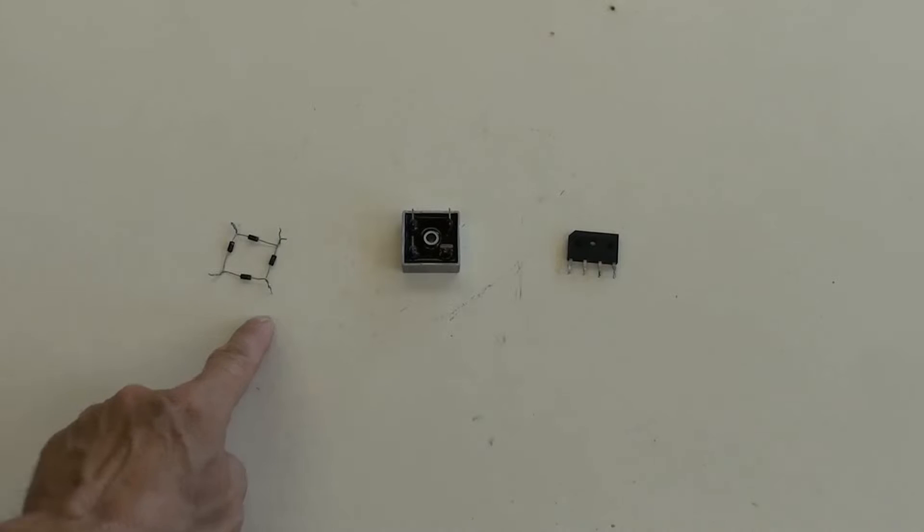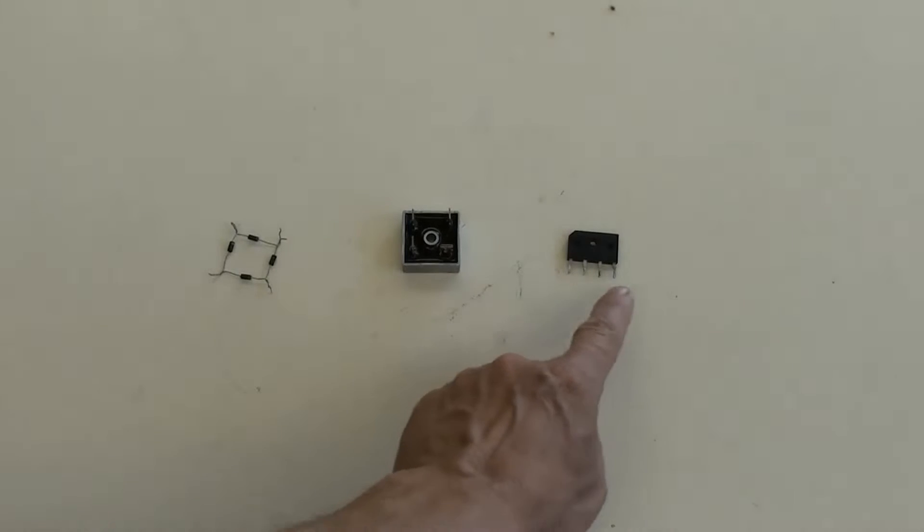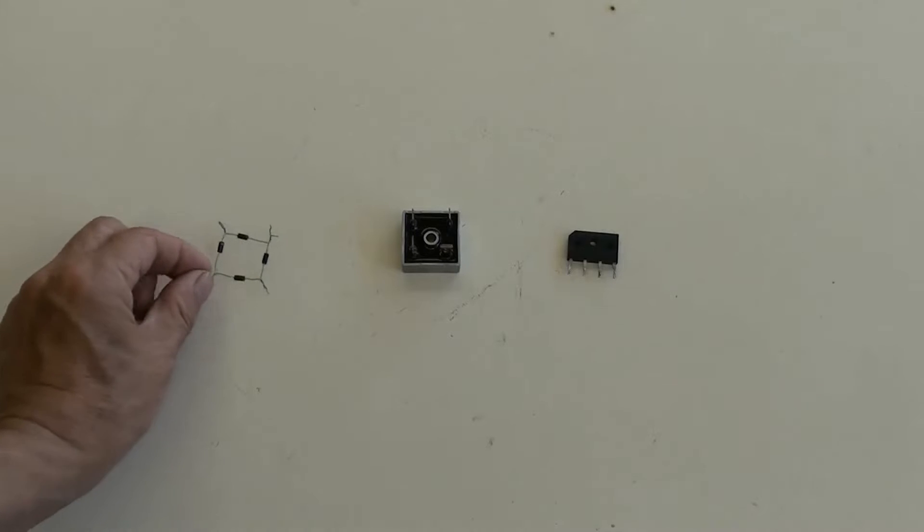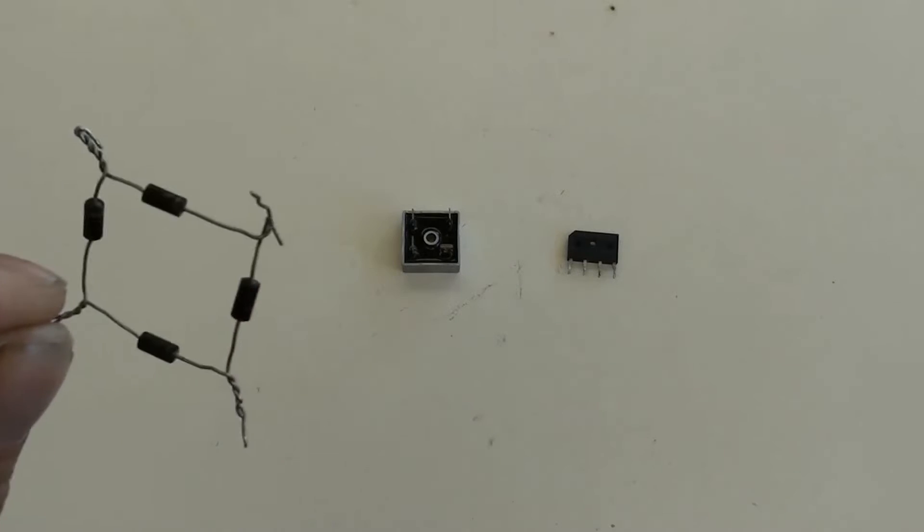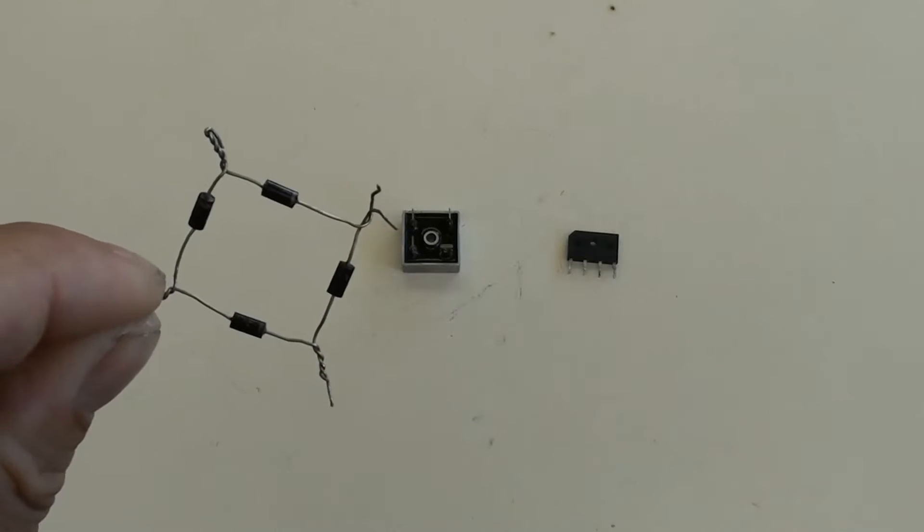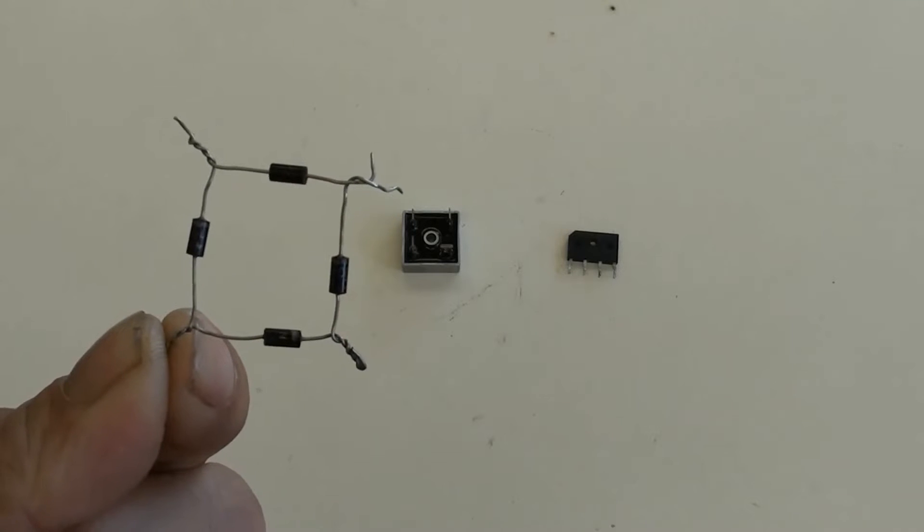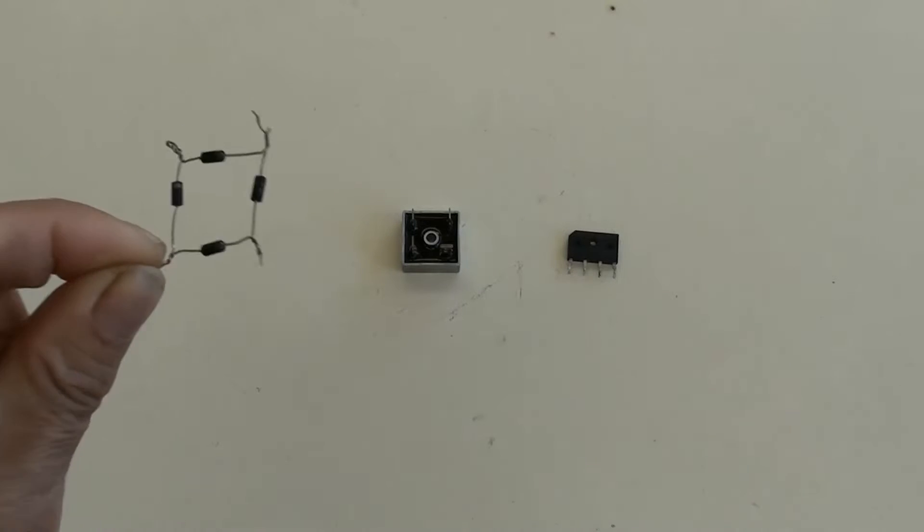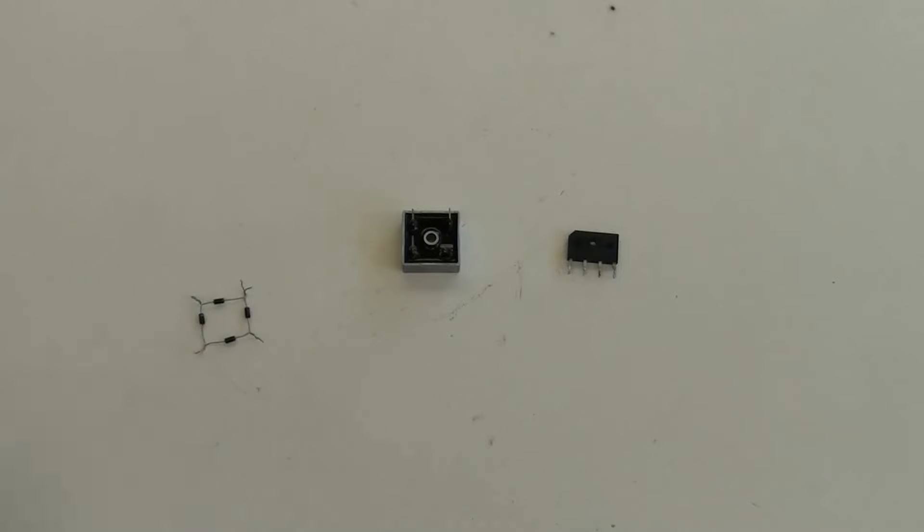These are bridge rectifiers. They may look different from each other but their function is the same. This type has been installed in most circuit boards for small amounts of current used, like this one.